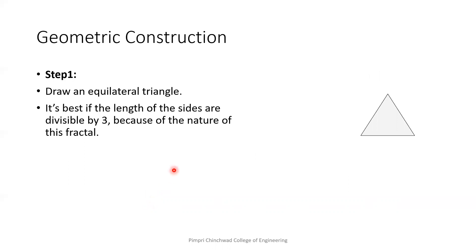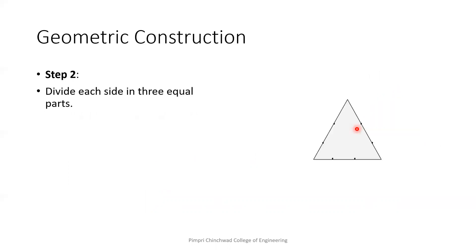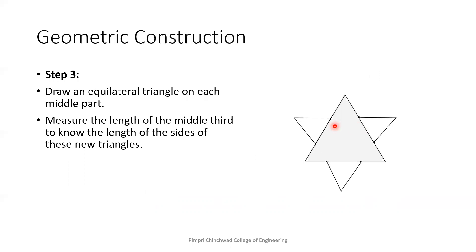So how to construct it geometrically? If I want to do it programmatically or by hand, I will have a triangle like this. I will divide each side of the triangle into three equal parts. Then we have to draw an equilateral triangle on each middle part like this. And then we have to remove this edge.